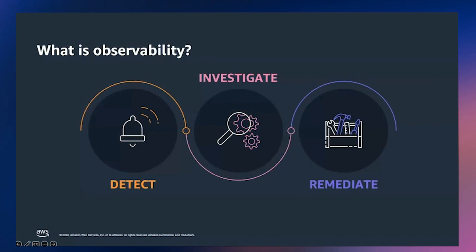Once you have identified the cause of the failure, it's time for remediation. This might be a short-term fix, patch, or rollback. You want to automate your deployments and changes as much as possible — there is nothing worse than trying to fix something and making the situation worse. Don't forget to do a post-event analysis. Determine how you could have prevented the failure in the first place. Your goal should be to ensure the same issue never happens again, and even if it does, you can identify and remediate it automatically.